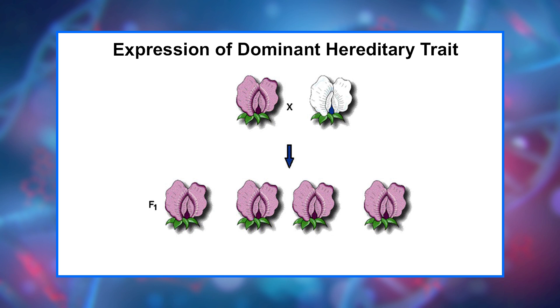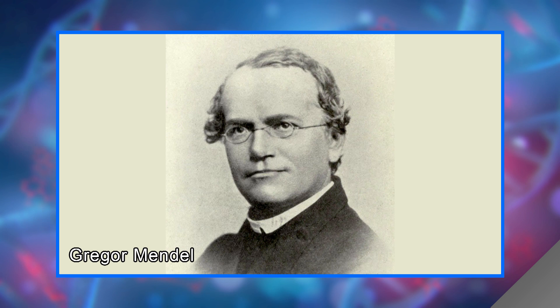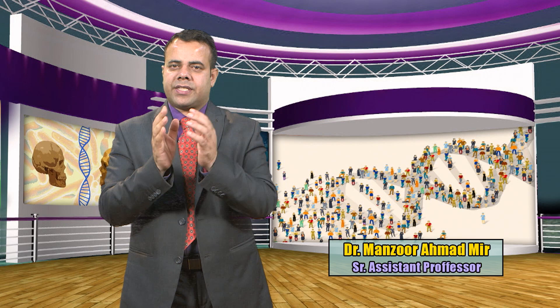After Mendel self-fertilized the F1 generation and obtained the 3:1 ratio, he correctly theorized that genes can be paired in three different ways for each trait: capital AA (dominant), small a small a (recessive), and capital A small a (also showing the dominant trait). Mendel stated that each individual has two factors for each trait, one from each parent. If the two factors are identical, the individual is called homozygous for the trait. If the two factors have different information, the individual is called heterozygous. The alternate forms of a factor are called alleles. The genotype of an individual is made up of many alleles it possesses, and an individual's physical appearance or phenotype is determined by its alleles as well as by the surrounding environment.